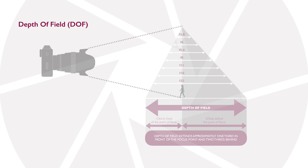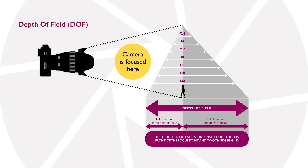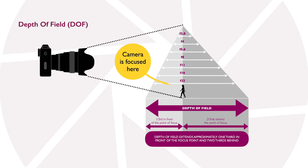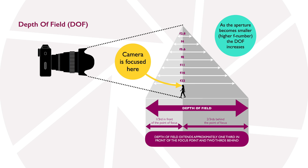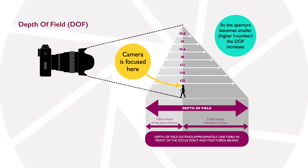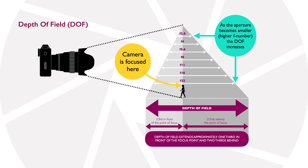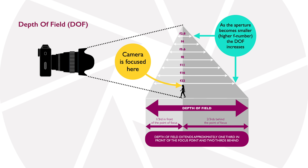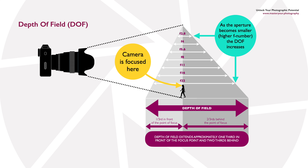This zone of acceptable sharpness that we call depth of field always extends one third in front of your subject and two thirds behind your subject. So you can use this fact to gauge how much of your image will actually be in focus. As you change your aperture the total amount that's in focus will vary, but the ratio of one third in front of your subject and two thirds behind remains the same.